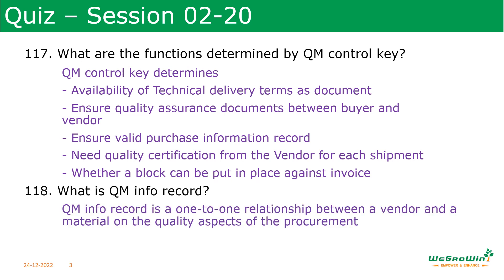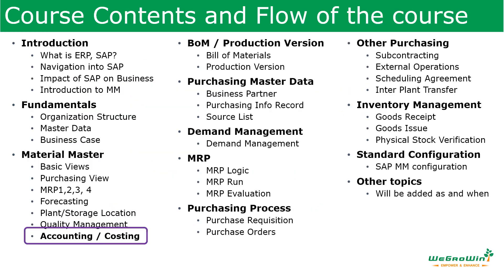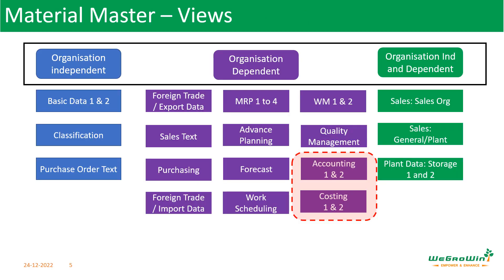What is the QM info record? The QM info record is the one-to-one relationship between vendor and material with respect to quality aspects. With this we'll be going to this session. In Material Master, this is the last session where we are going to discuss about accounting and costing views. These views use parameters which are dependent on the organization — plant-dependent details are maintained here.